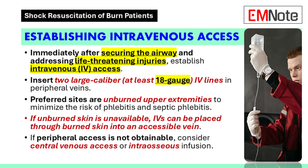For a patient who comes in with severe burns, the very first thing is to make sure the airway is secure and address any immediate life-threatening injuries. Then we need to get two large-bore IVs in — at least 18 gauge minimum — using peripheral veins if we can, preferably upper extremities if they're not burned. If there's no unburned skin available, we can place IVs right through the burned skin.